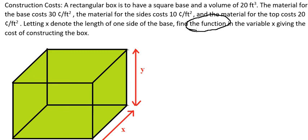Now I want to show you how to answer this. A rectangular box is to have a square base and a volume of 20 cubic feet. The material for the base costs 30 cents per square foot.